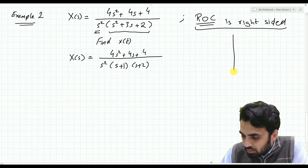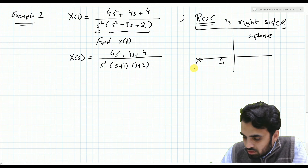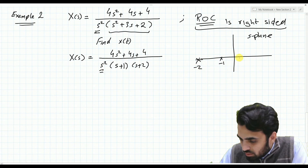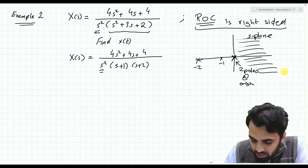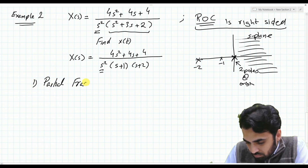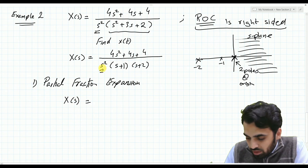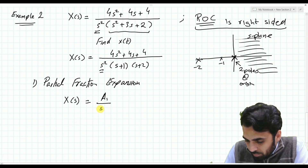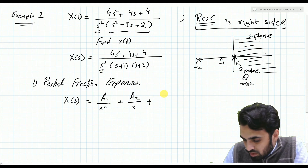Since the ROC is right-sided, the s-plane has a pole at −1, a pole at −2, and two repeated poles at the origin. The ROC is to the right of all poles. We take the partial fraction expansion: X(s) = A1/s² + A2/s + B/(s+1) + C/(s+2), where A1 and A2 cover the repeated s² part.